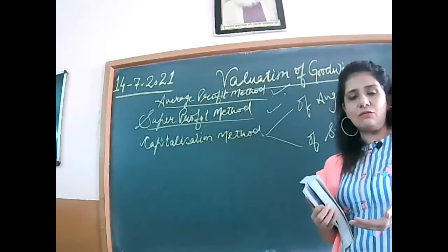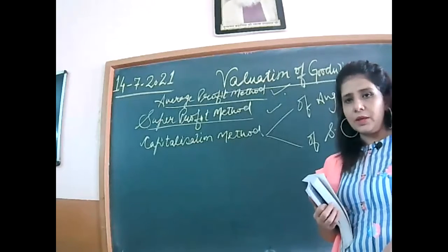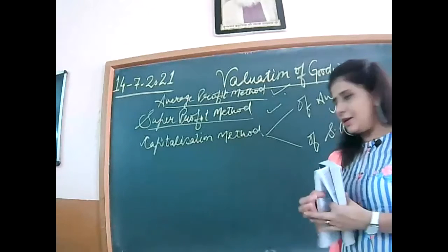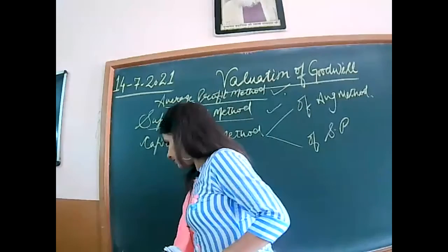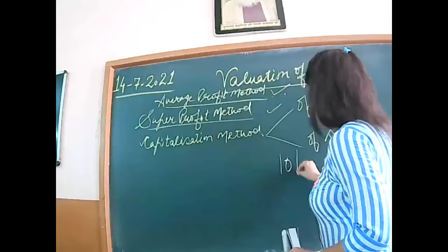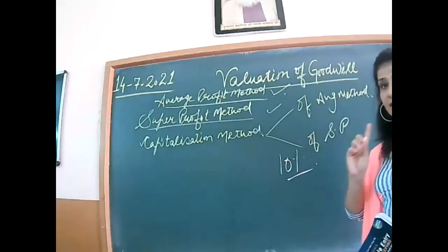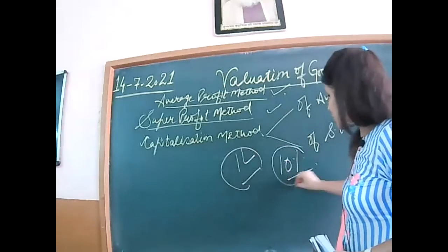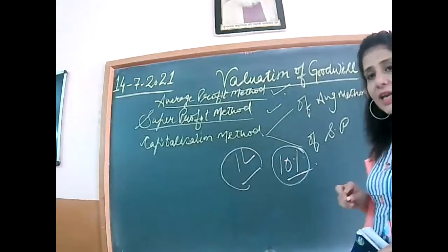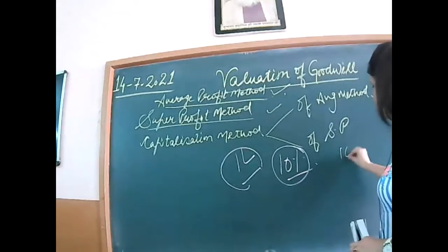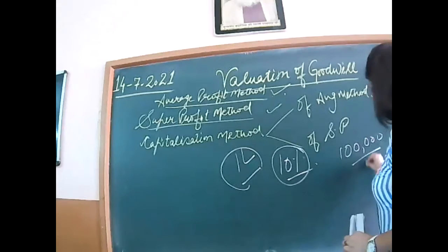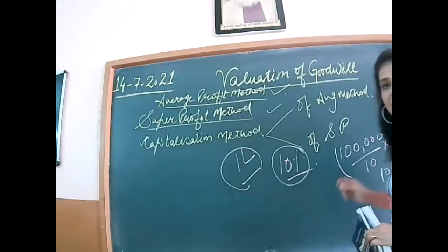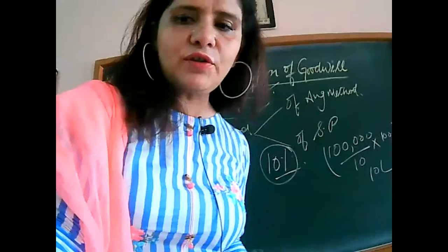In that case, I will be calculating the capitalized value of the firm. If someone earns 1 lakh rupees at 10%, to calculate how much was invested, I will write 1 lakh, divide by the rate, and multiply by 100. So you will get 10 lakh. That is what we call the capitalized value of the firm.